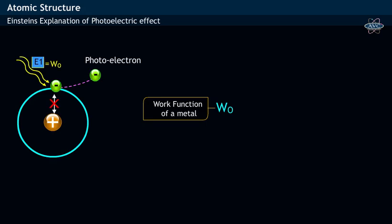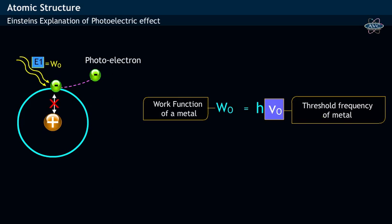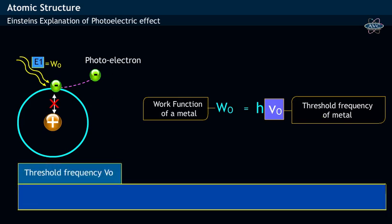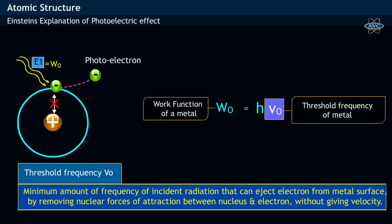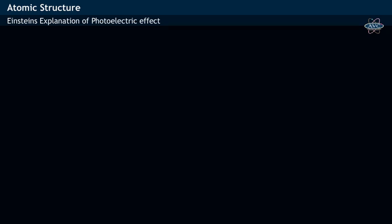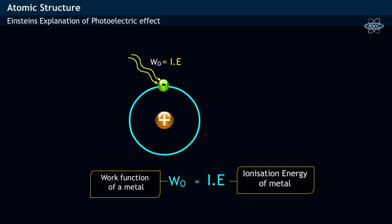Work function of a metal W0 equals h nu0. Here, nu0 refers to the threshold frequency of the metal. Threshold frequency is the minimum frequency of incident radiation that can eject electron from the metal surface by removing nuclear forces of attraction without giving any velocity to the electron. Work function is nothing but ionization energy.